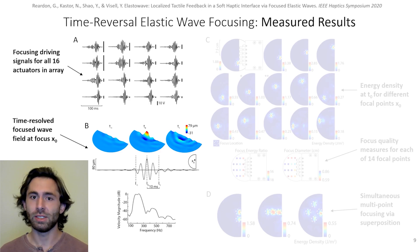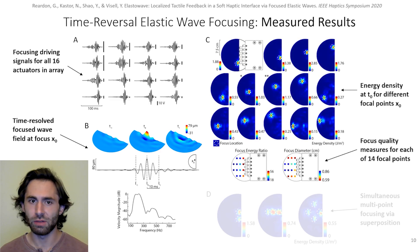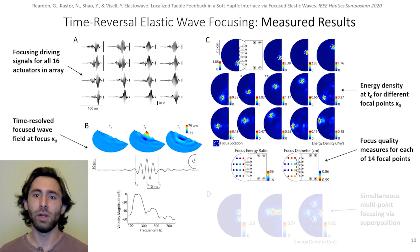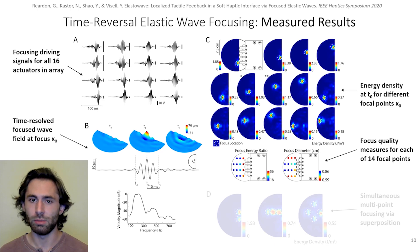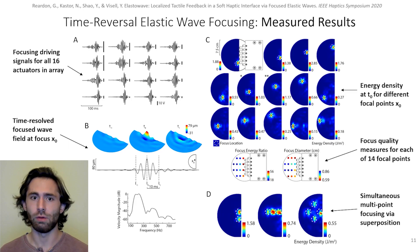At the focus, peak displacements ranged from 30 to 100 micrometers and were composed of broadband energy centered at 200 Hz. For all foci measured, the energy was confined to a region on the surface of the medium with less than one centimeter diameter at the desired location. Some varying focus behavior was observed as we moved away from the actuators and towards the medium boundaries. We were also able to focus simultaneously at multiple locations by superposing focused wave fields through additive combination of the actuator driving signals for different foci.